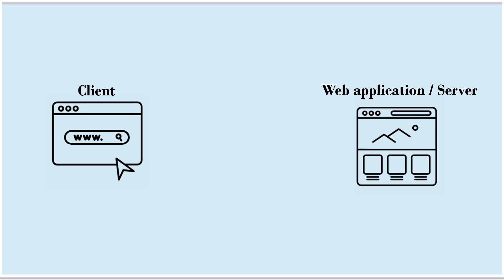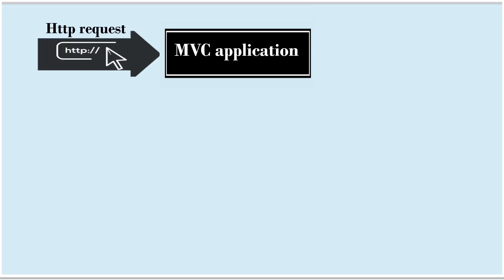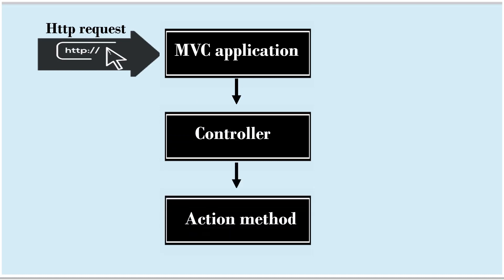To understand routing, we should understand the working model of web applications. In a web application, there will be a client and a server, and applications will be hosted on the server. The client is nothing but our browser, and requests will be in the form of HTTP requests. Our application follows MVC architecture. In an MVC application, whenever there is a request, the right controller and specific action method inside that controller will be selected to handle that request. This is nothing but routing.